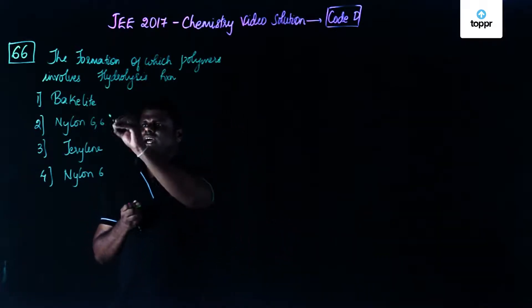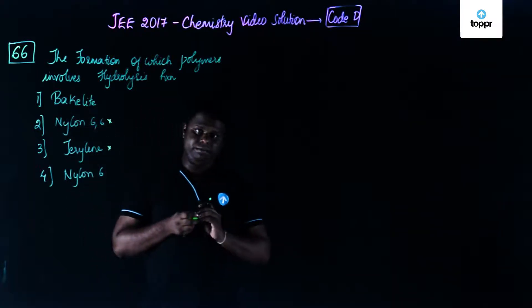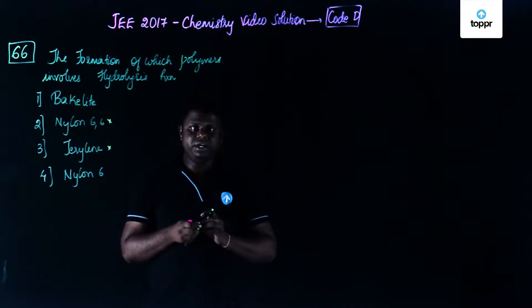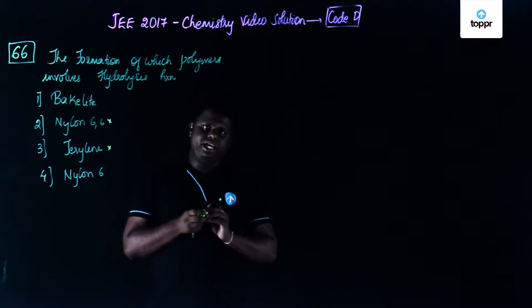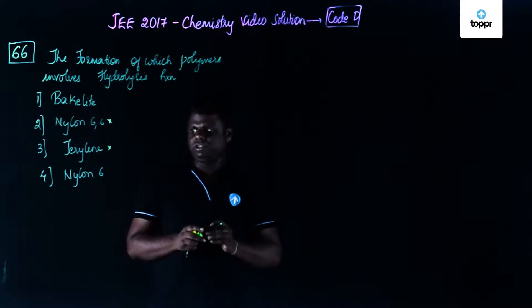So that means you could have nylon 6,6 and terylene which is the incorrect answer and then comes the bakelite. Bakelite is basically phenol and formaldehyde polymer. So phenol and formaldehyde polymer, it undergoes some sort of addition reactions but that's definitely not a hydrolysis.